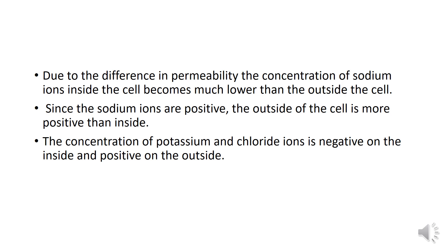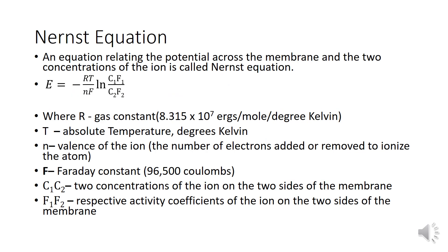Due to the difference in permeability, the concentration of sodium ions inside the cell becomes much lower than outside the cell. Since sodium ions are positive, the outside of the cell is more positive than the inside. The concentration of potassium and chloride ions is higher on the inside, making the inside negative and the outside positive. An equation relating the potential across the membrane to the concentrations of ions is called the Nernst equation.